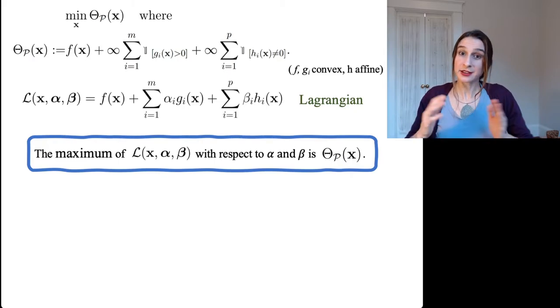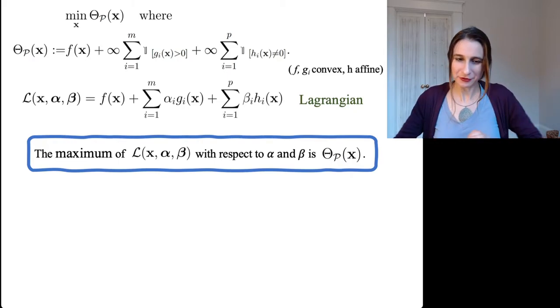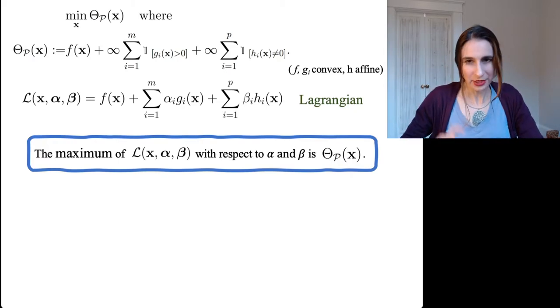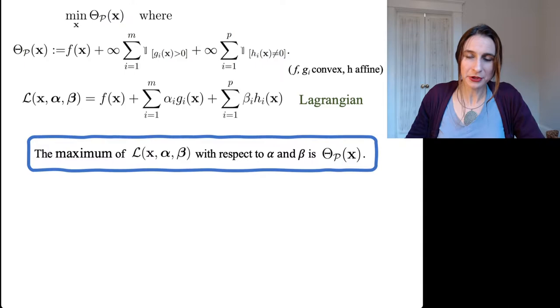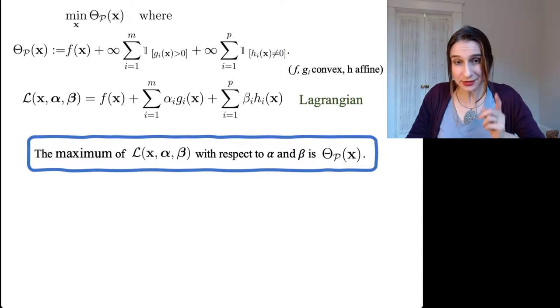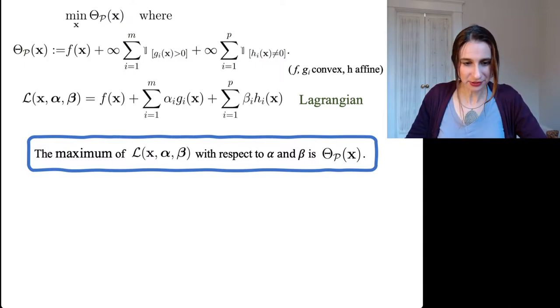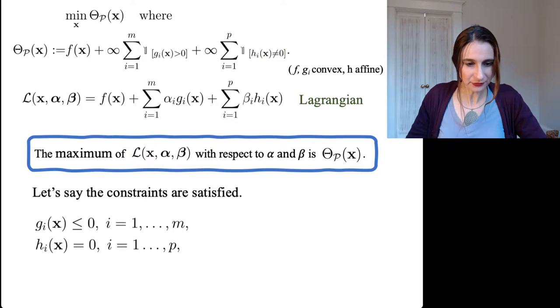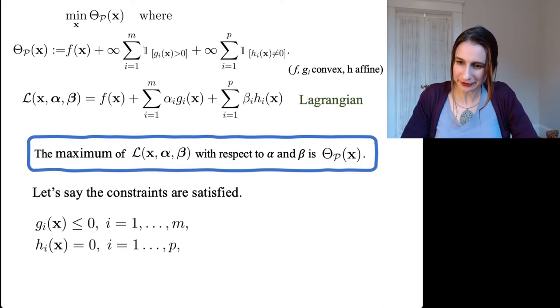At the very end of the previous video, I claimed without proof that the maximum of the Lagrangian with respect to alpha and beta is equal to the primal objective. I'm going to prove that very quickly.